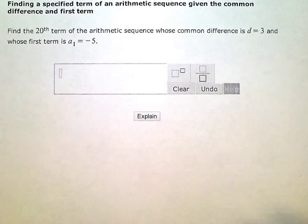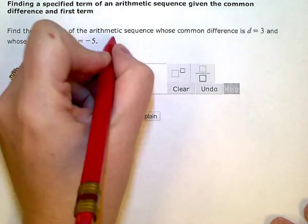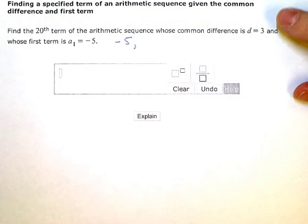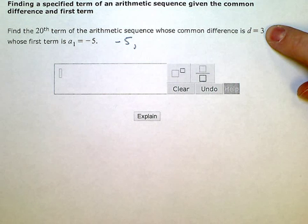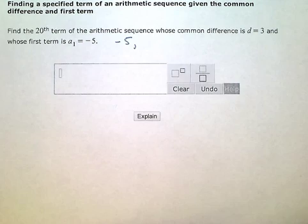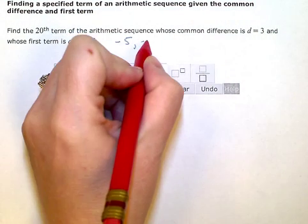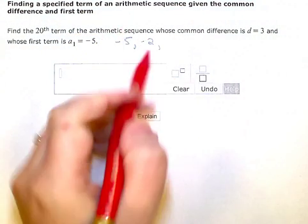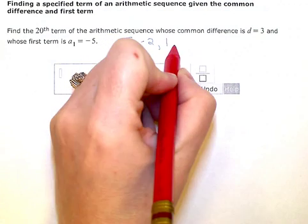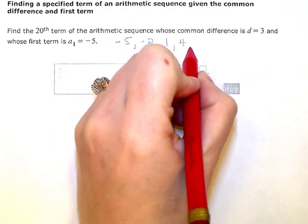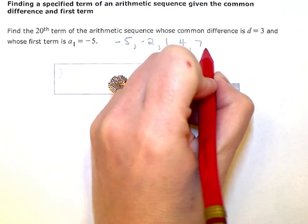So this sequence looks like this. The first term is negative 5. My common difference is 3, which means I'm adding 3 to get each successive term. So negative 5 plus 3 is negative 2. Negative 2 plus 3 is positive 1. Positive 1 plus 3 is 4. 4 plus 3 is 7. So on and so forth.